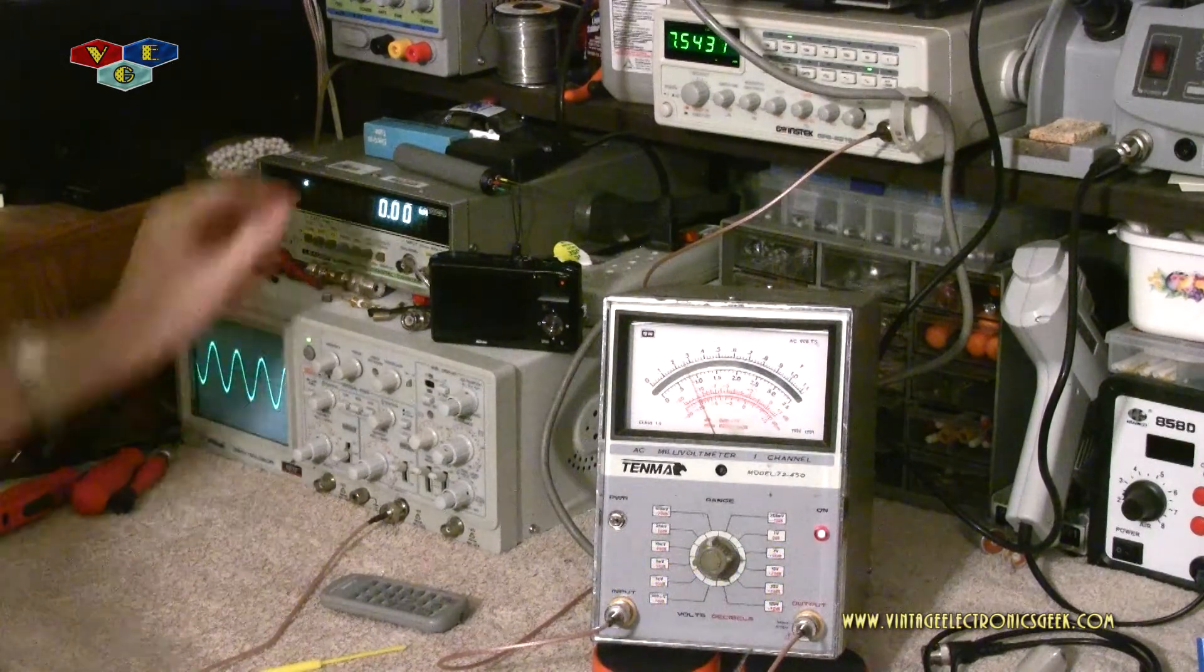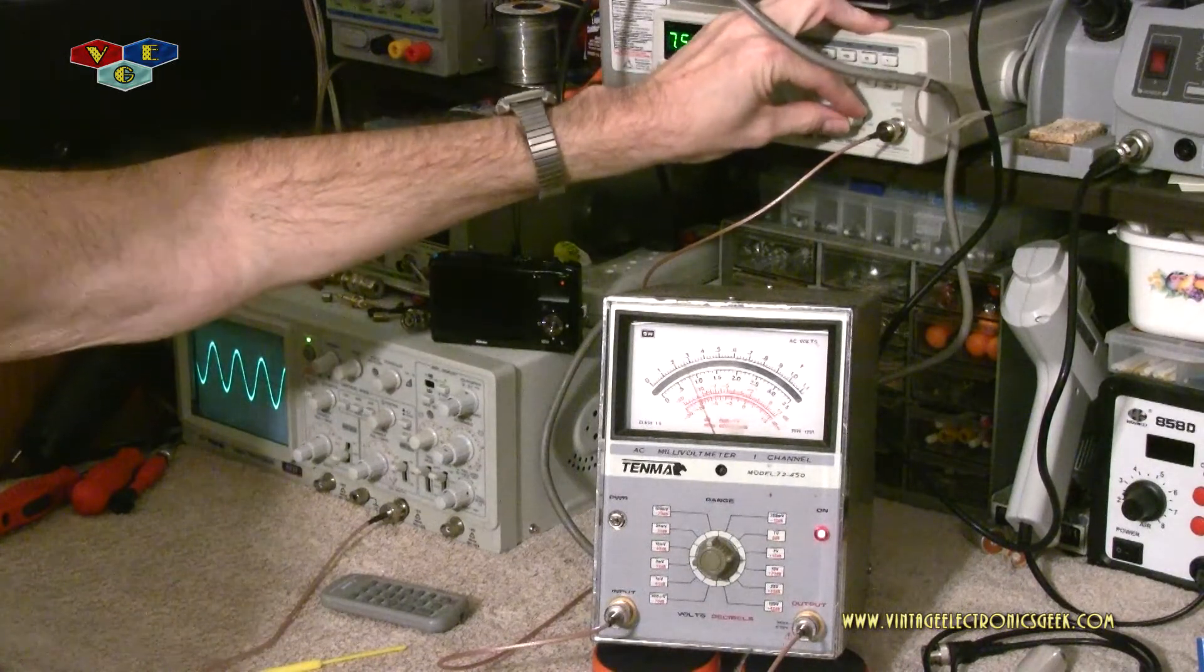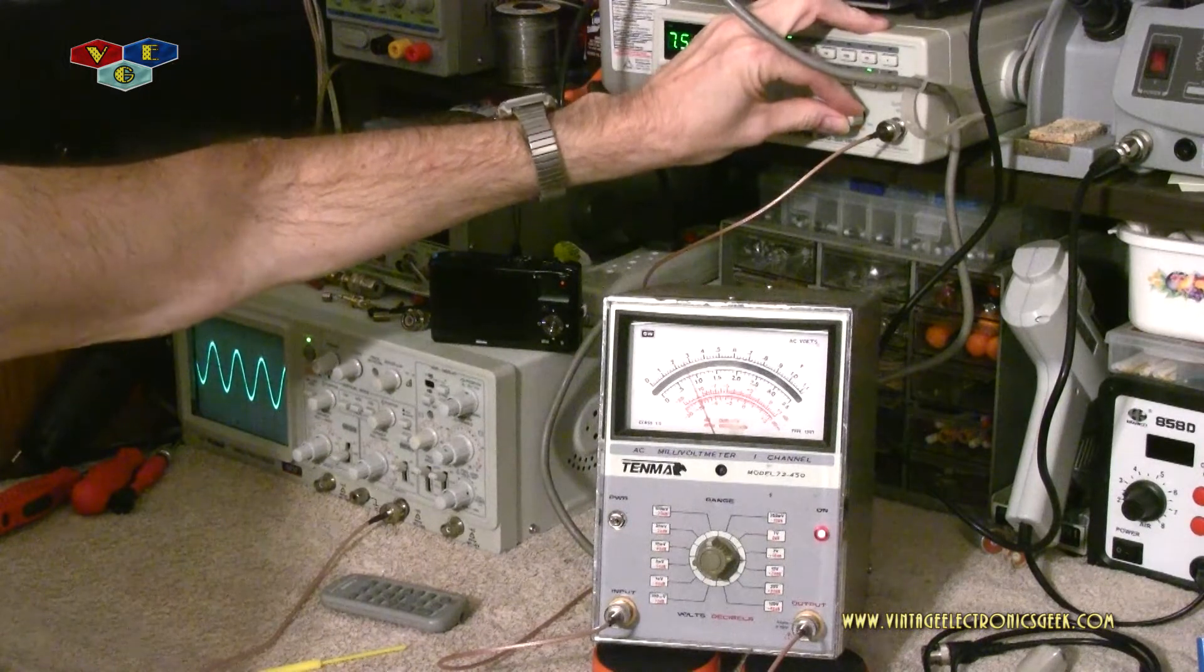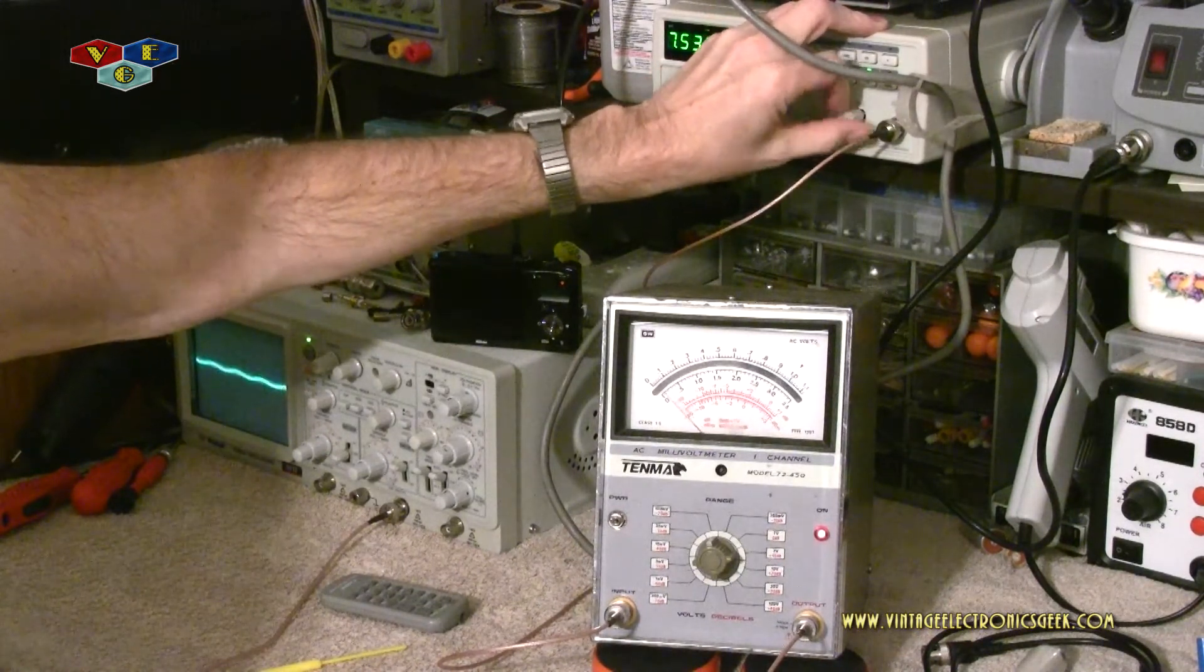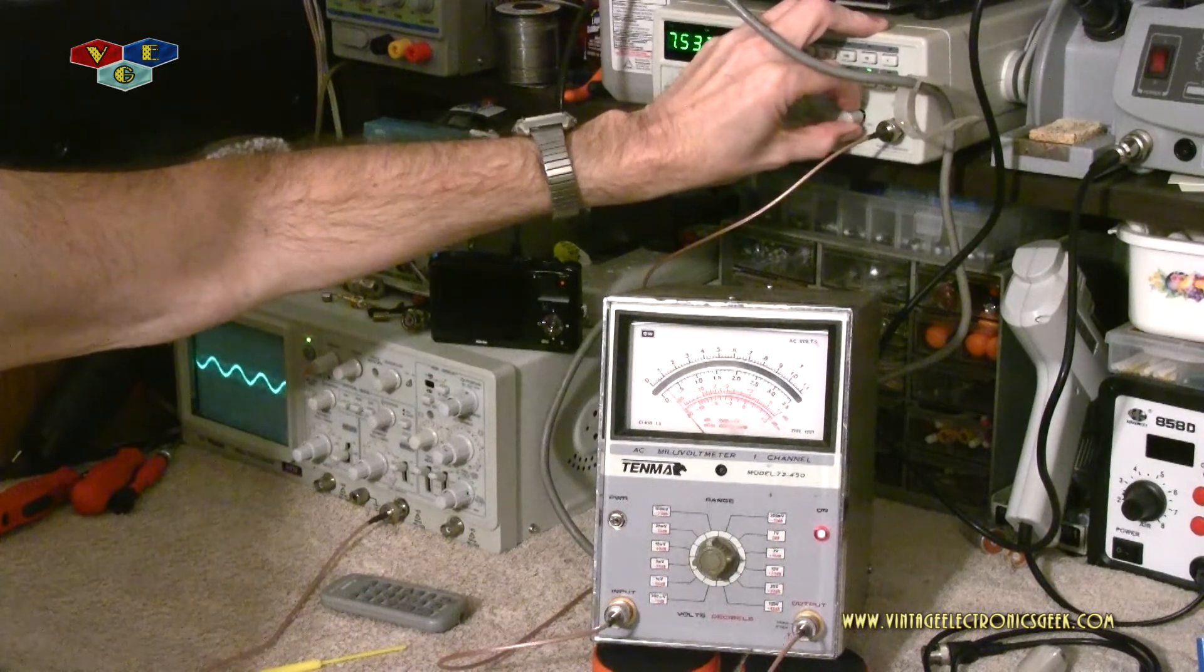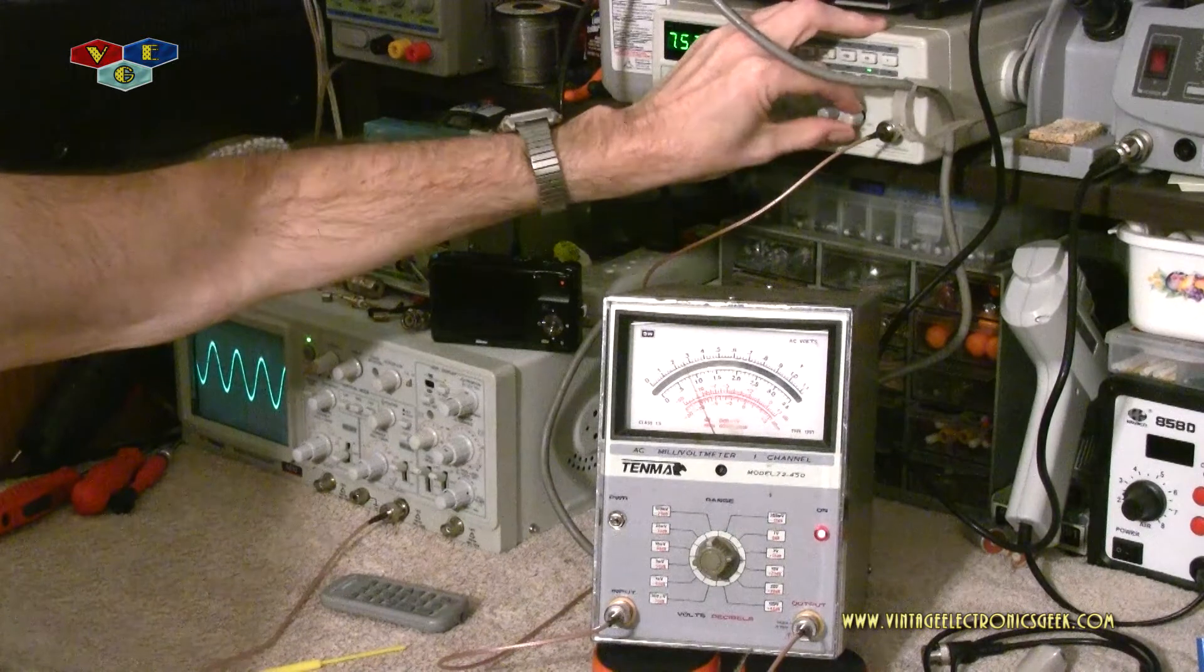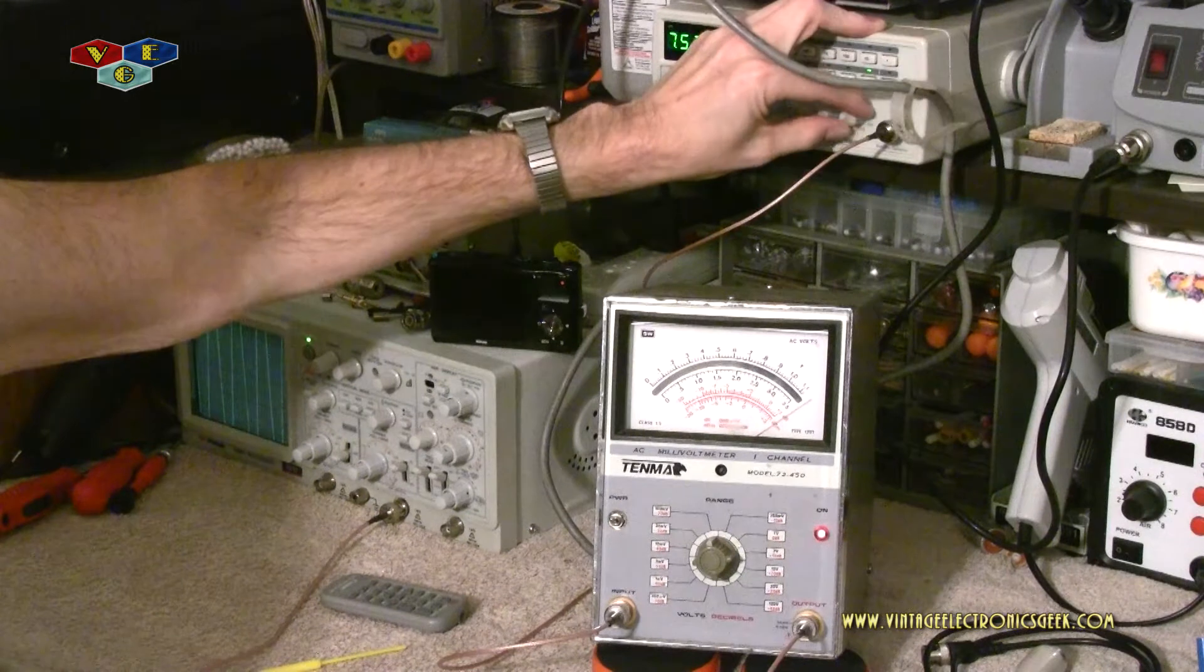Now if I adjust the amplitude on the function generator you could see both of them corresponding. And so that's full power there on the generator.